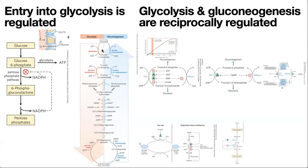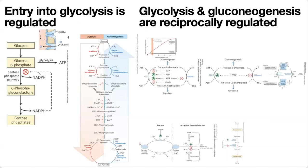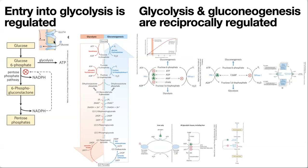In our example of glycolysis and gluconeogenesis, we'll also see other concepts. We're going to regulate the far-from-equilibrium steps, because these are the ones that are hard to go back from. When we say far from equilibrium, we have a really large negative delta G — there's a strong drive toward equilibrium and it's very hard to go in reverse. These are typically the committed steps for a pathway, as well as entry steps into a pathway.